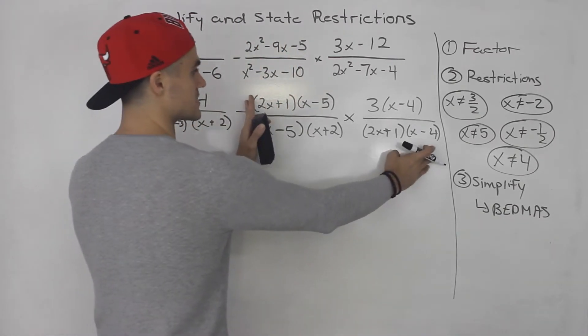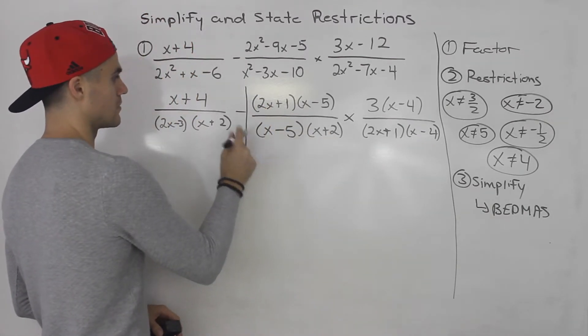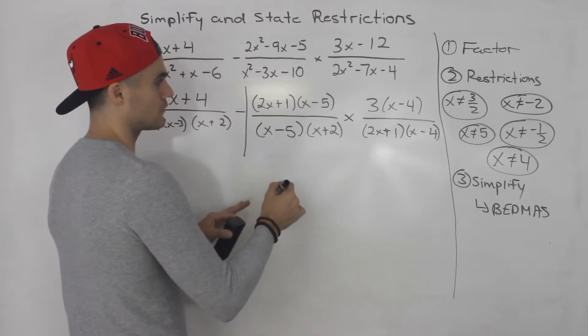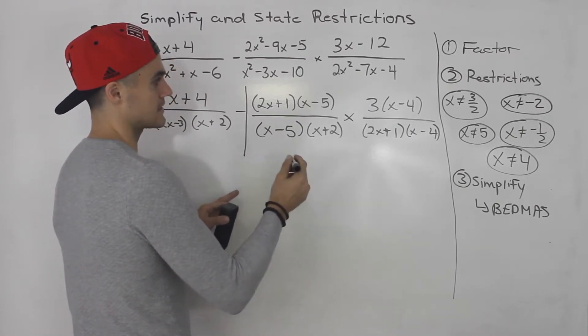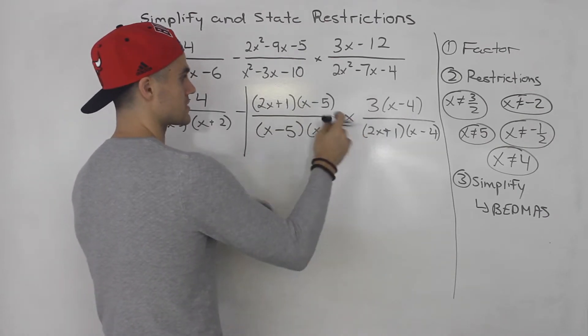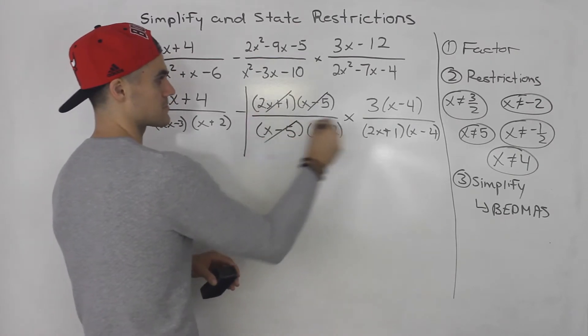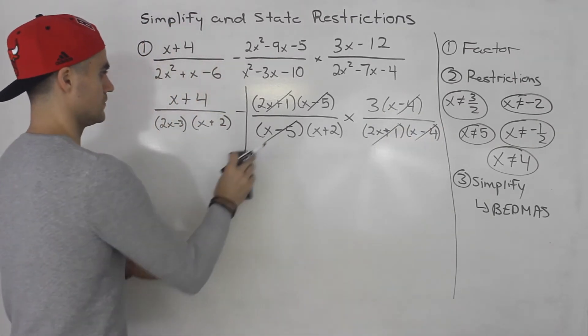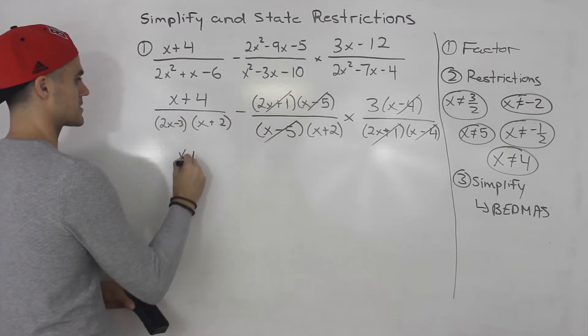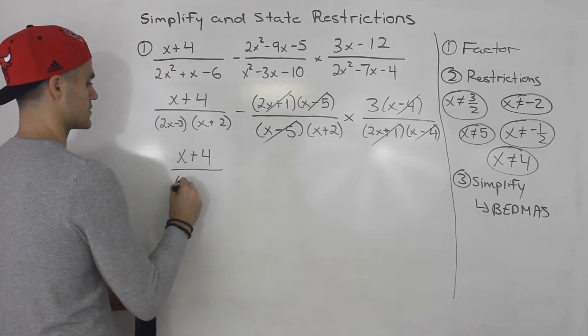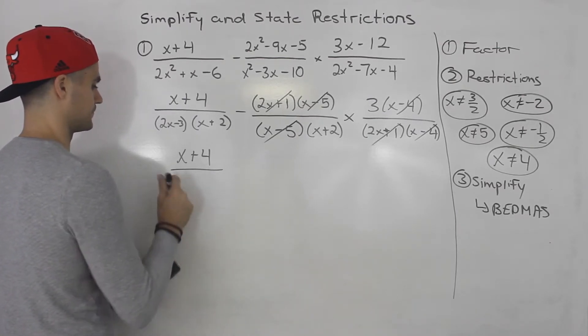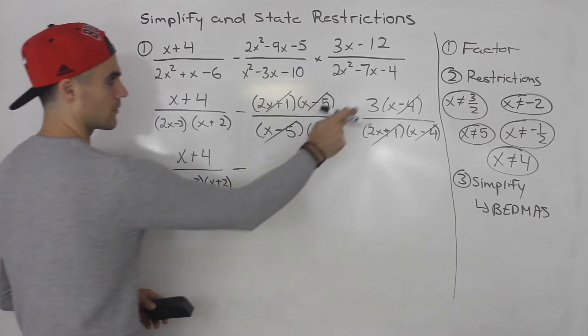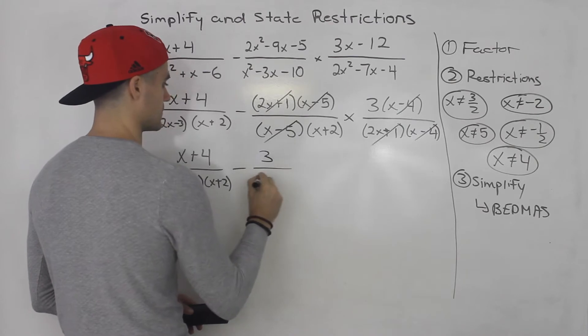So we're actually going to have to deal with this first. So we sort of cut this off, pretend this doesn't exist, and just pretend like we're multiplying two rational expressions. When we're multiplying, we look for factors that can cancel out in the numerator and the denominator. Notice x minus 5 cancels out, 2x plus 1 cancels out, and then this x minus 4, this x minus 4 cancel out. What are we left with? We got x plus 4 over 2x minus 3 times x plus 2. And then we're going to be subtracting, we're left with a 3 in the numerator, and then x plus 2 in the denominator.